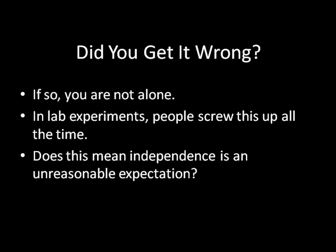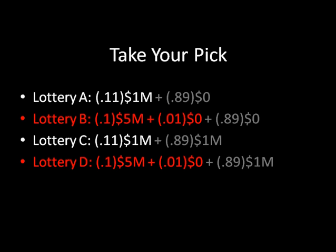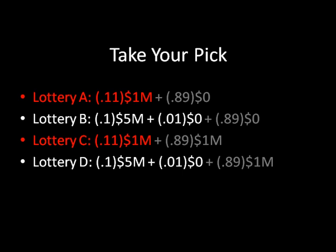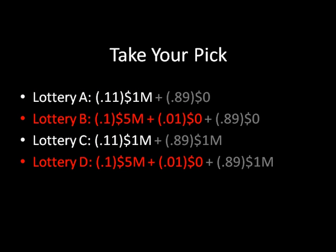Did you get it wrong? You're not alone — in lab experiments, people get this wrong all the time. I think what's really going on is that people aren't very good at seeing how these lotteries decompose to reveal that the underlying comparison is the same. Once we break it down, it makes sense that you have to prefer A and C or B and D — but without that visual breakdown, it can be difficult.